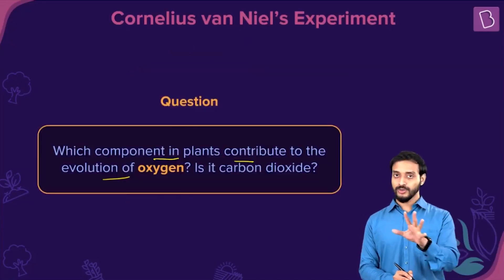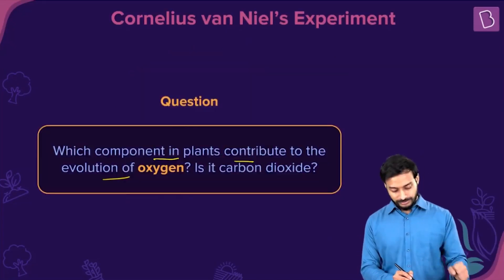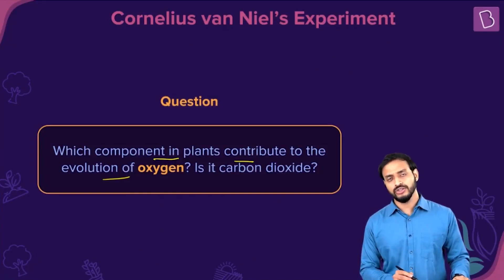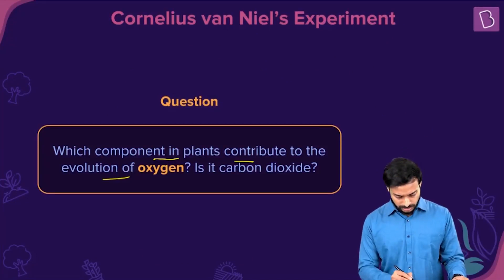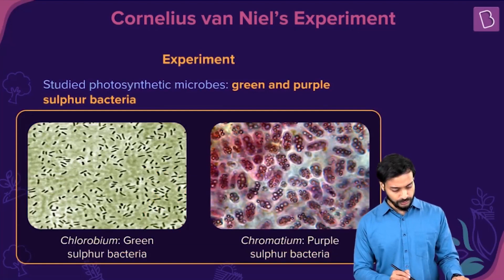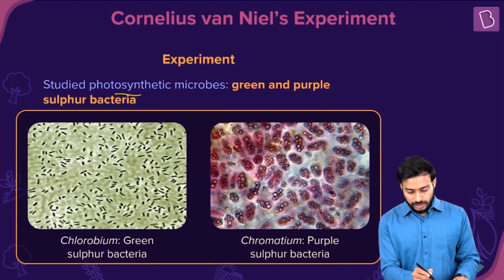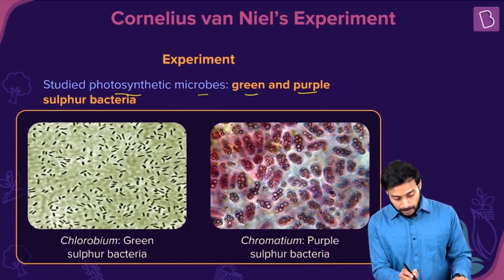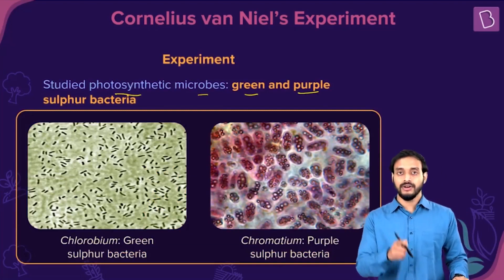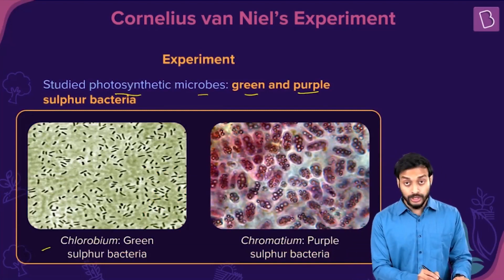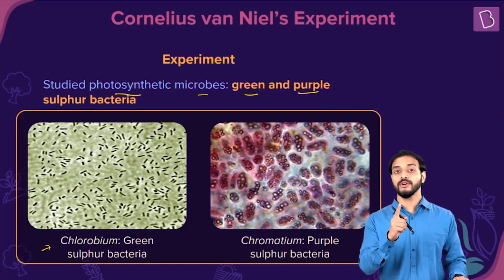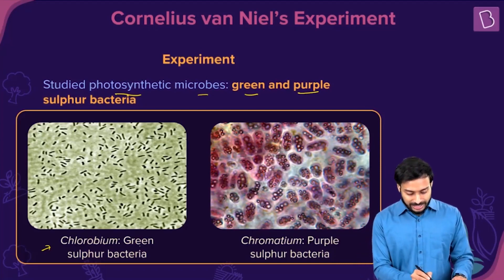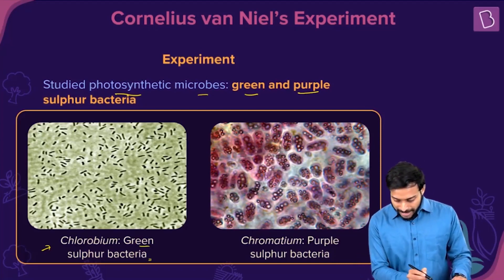Van Niel's question was: is the oxygen coming from carbon dioxide? To prove this, he studied photosynthetic microbes — green and purple sulfur bacteria. Note this example carefully. This is a very important experiment. Okay, Chlorobium — it's a green sulfur bacterium.